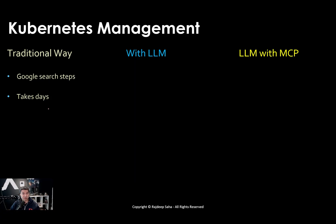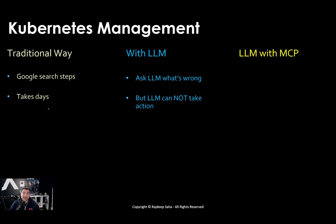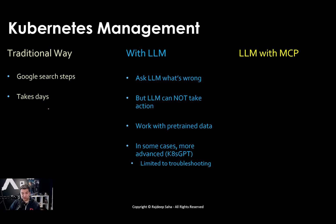Then came large language models. LLMs make it a little bit easier. You can ask an LLM to write you a Terraform file, or give it the error that the Kubernetes cluster is giving, and the LLM gives you the answer. But LLM cannot take any action — you copy from the LLM response, paste it in the Kubernetes cluster, and it might fix it or might not. LLMs also work with pre-trained data, so if a new Kubernetes version comes up, the LLM might not know all the nuances. Tools like KubernetesGPT are a bit more advanced, but still limited to troubleshooting and it still takes hours.